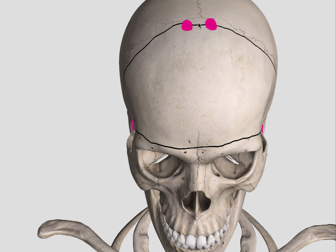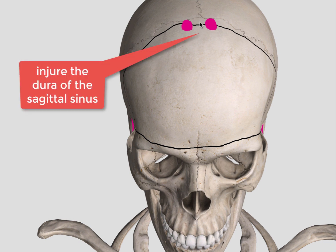In the earlier days I have put a burr hole in the midline. Usually it's fine, but if you are using a perforator, sometimes the perforator can misfire and you can injure the dura.